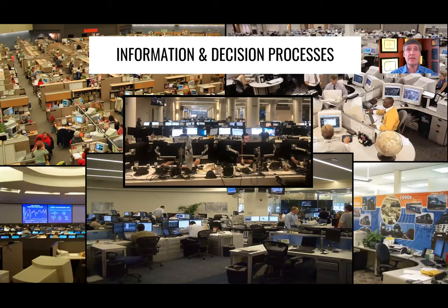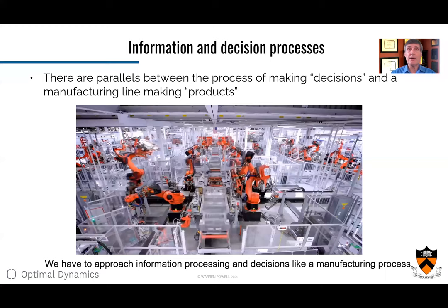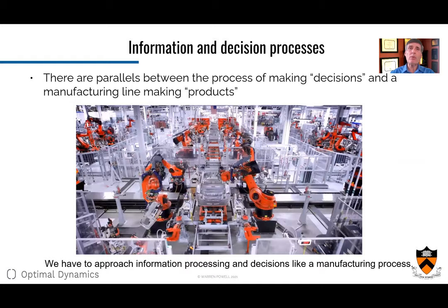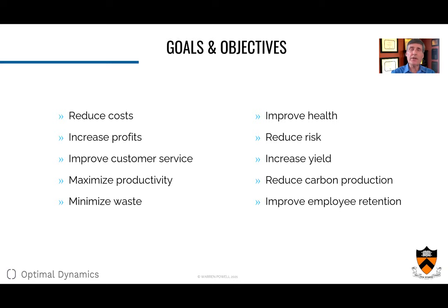Each of these systems can be thought of as a flow of information with humans making decisions along the process. A good way to think about these problems is as a manufacturing line with robots adding parts to a car, making the chassis better and better and closer to a car. If we want to do a better job with these processes, we're going to need to focus on the various metrics: reducing costs, increasing profits, reducing risks, reducing carbon production, minimizing waste — whatever the goals and objectives are.